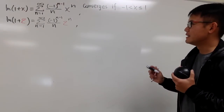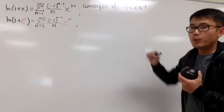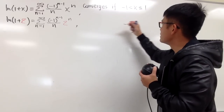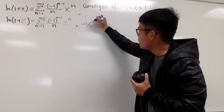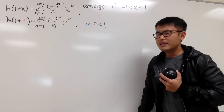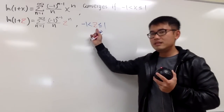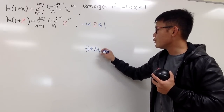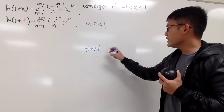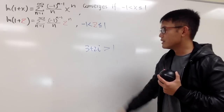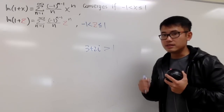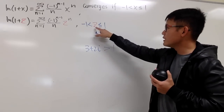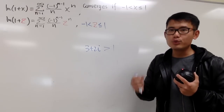If I just write this converges if negative 1 < z ≤ 1, there's trouble: z is a complex number, and we cannot use inequality for complex numbers. For example, saying 3 plus 2i is greater than 1 doesn't make any sense. Inequality only makes sense with real numbers.